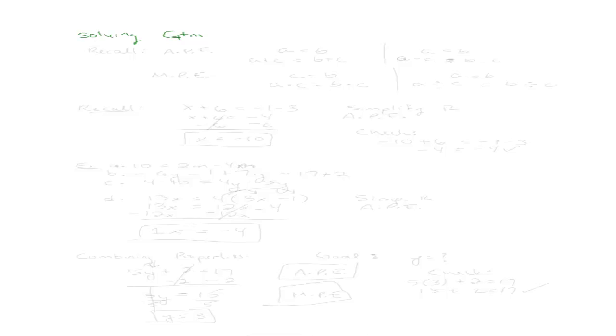Let's recall the addition property of equality, which we already talked about. The addition property of equality says that if we have an equation with both sides being equal, I can add the same number to both sides and both sides of the equation are still equal. Similarly, I can also subtract the same number from both sides — a minus c and b minus c — and that equal sign is still true. Both sides of the equation are still going to be worth the same.